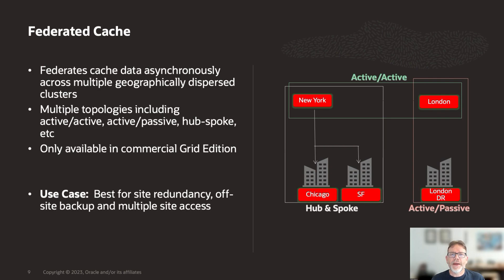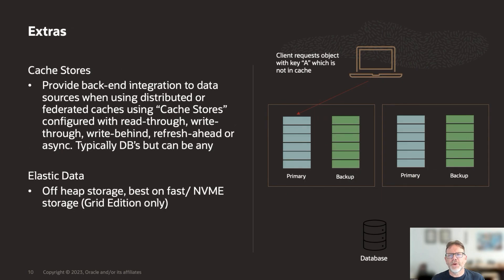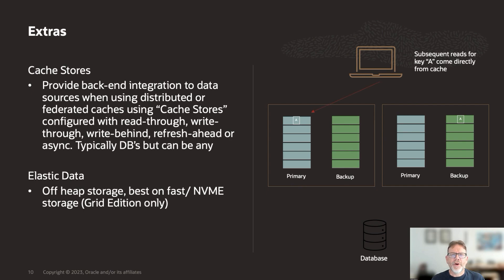There are a couple of other cache types or configurations which really deserve their own videos, but I will outline them quickly. Cache stores, which can be attached to distributed or federated caches, provide back-end integration into data sources — which are typically databases — to read or write data to or from these data sources via asynchronous, synchronous or non-blocking data stores. Elastic data caches allow you to store your data off-heap, usually on fast NVMe storage, to increase cache capacity.